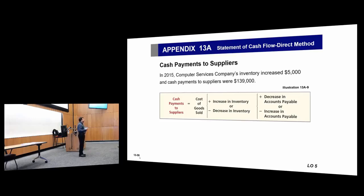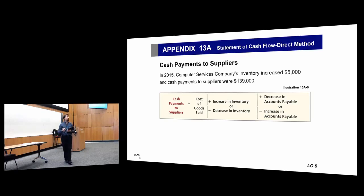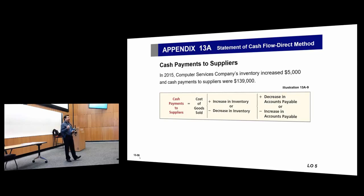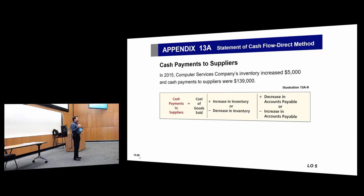In addition, the company will adjust for changes in accounts payable to make sure those purchases were in cash. An increase in accounts payable means you did not pay everything you purchased this year, so a decrease in accounts payable will be subtracted — it simply means the company paid more. They paid whatever they purchased this year, plus some of the outstanding accounts payable.